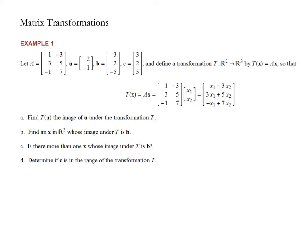So now let's answer some questions involving transformations. Example one, we're given a matrix A, a vector U, a vector B, and a vector C. And we're defining our transformation from R2 into R3 by T of X equals AX. That is what the transformation is. And so what part A wants us to do is find the image of vector U. What is T of U? So part A, I need T of U. That is, I take and I multiply A times U. So I'm going to write down my matrix A, 1, negative 3, 3, 5, and minus 1, 7, times the vector U, 2, negative 1.